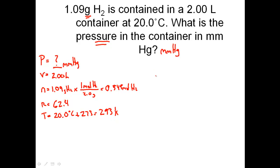Let's write our equation: PV equals nRT. Let's rearrange to find the pressure. Therefore, pressure equals nRT divided by volume. At this point, it becomes plug and chug. Pressure equals 0.545 for our moles, R is 62.4, temperature is 293 K, and we divide that by a volume of 2.